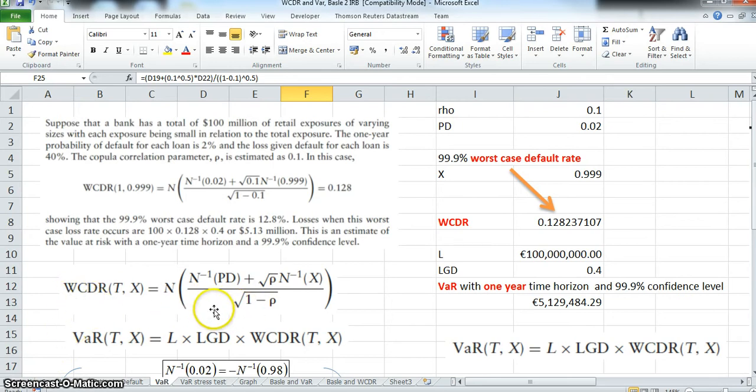We're using this Gaussian formula where we set out a probability of default, and we have the default rate and then we have this correlation estimate. The copula correlation parameter is a measure of the correlation between each pair of obligors, and it might be thought of intuitively as the degree to which when things go wrong they go wrong together. Increasing this magnitude generally will increase the level of Value at Risk, and we'll see that later.